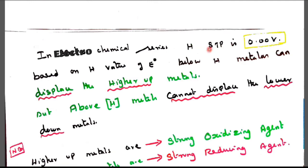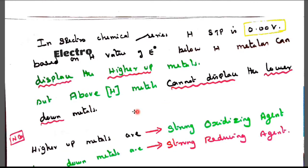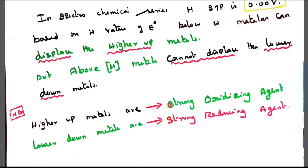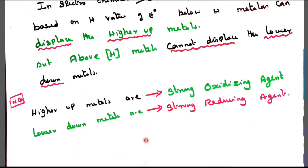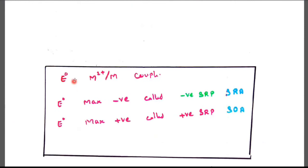In electrochemical series, hydrogen standard reduction potential is 0.00 voltage. Based on H values, E⁰ below the H metals can displace the higher up metals, but above H metals cannot displace the lower down metals. Higher up metals are called strong oxidizing agents, lower down metals are called strong reducing agents based on hydrogen.